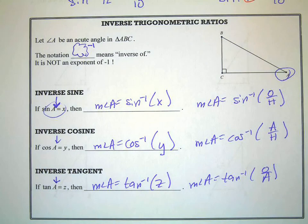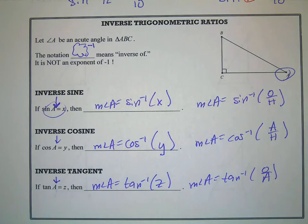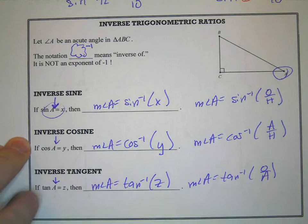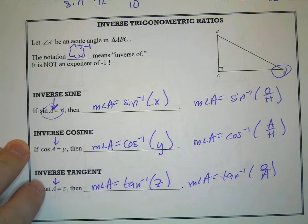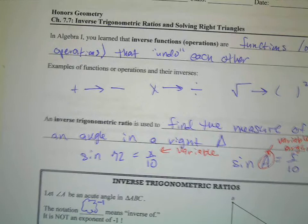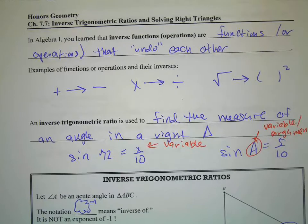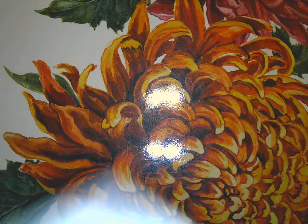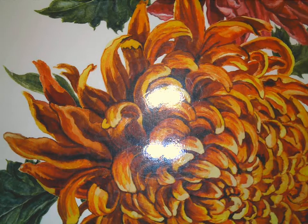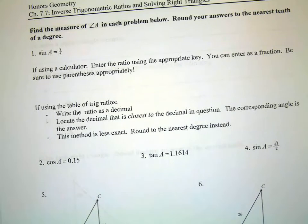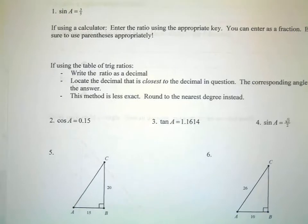It's just a different notation — it means we're finding what the angle is. Basically what we're doing is using that chart backwards, saying what angle corresponds with a certain trig ratio.